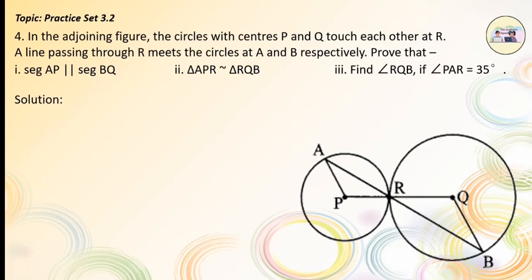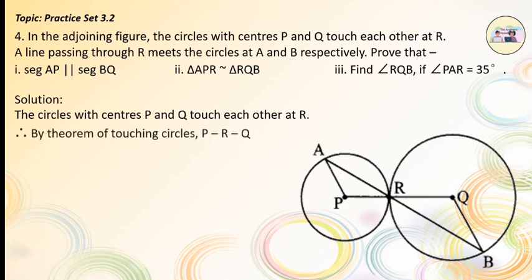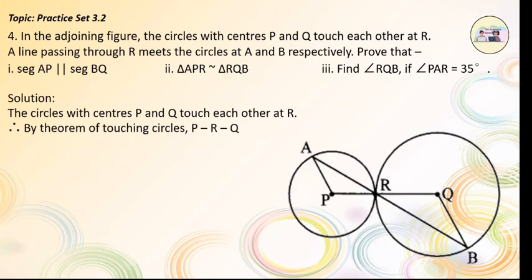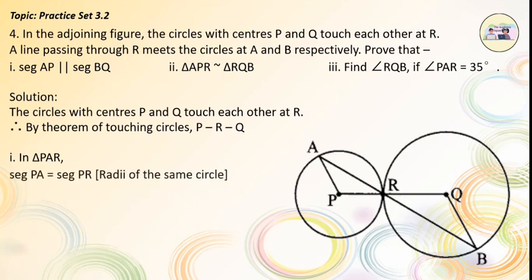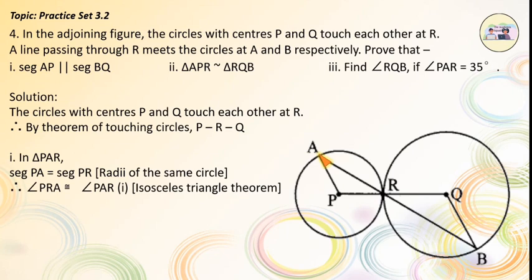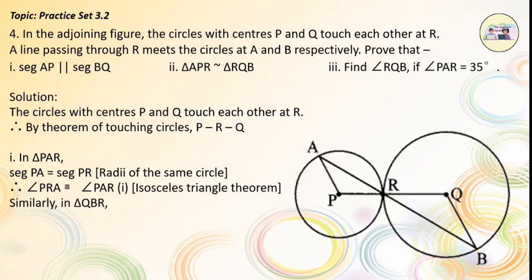Solution. The circles with centers P and Q touch each other at R. Therefore, by the theorem of touching circles, P, R, Q are collinear. In triangle PAR, seg PA = seg PR, i.e. radii of the same circle. Therefore, angle PRA is congruent to angle PAR — equation No. 1 — by the isosceles triangle theorem. They are the base angles of the triangle.